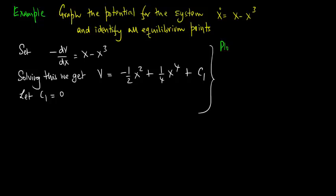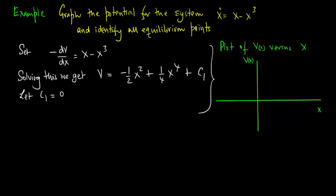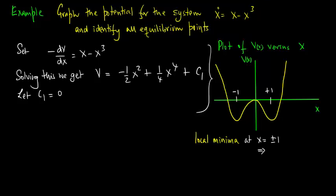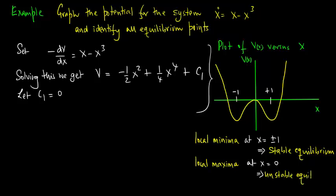Now let us make the plot of V of x versus x. This plot is a little more involved. We highlight the local minima at x equals plus 1 and minus 1, which correspond to stable equilibria, and the local maxima at x equals 0, which corresponds to unstable equilibrium.